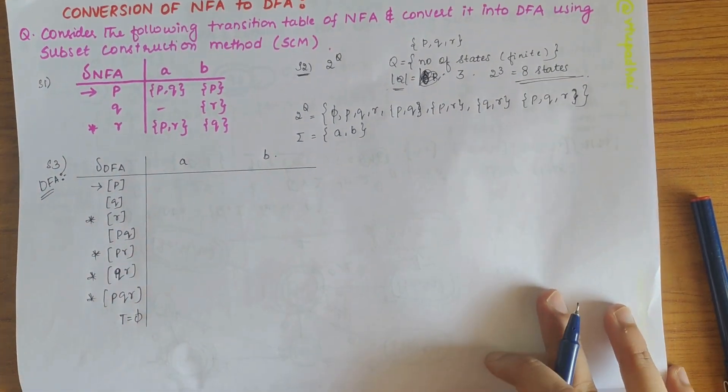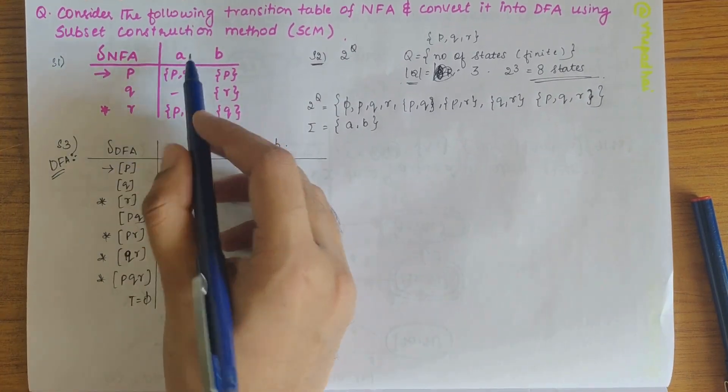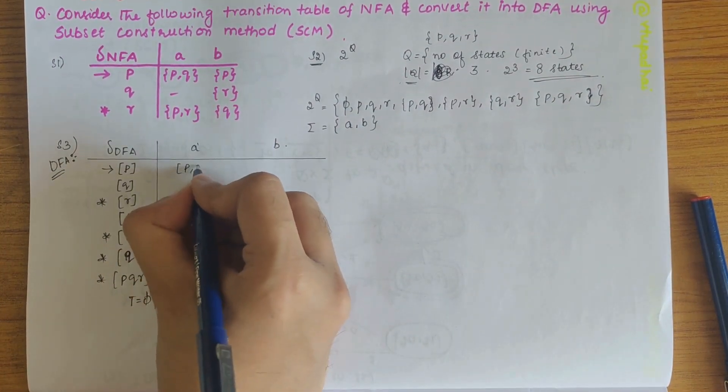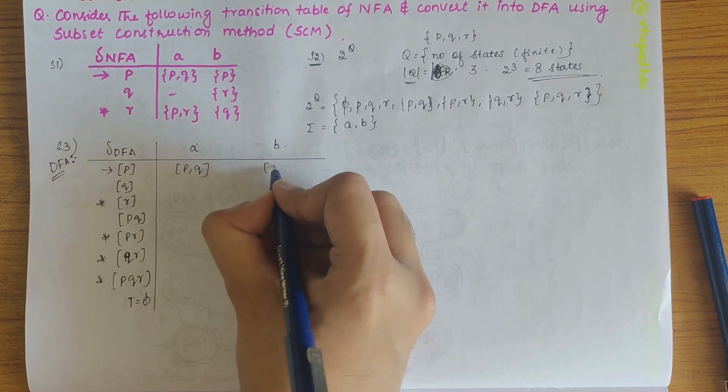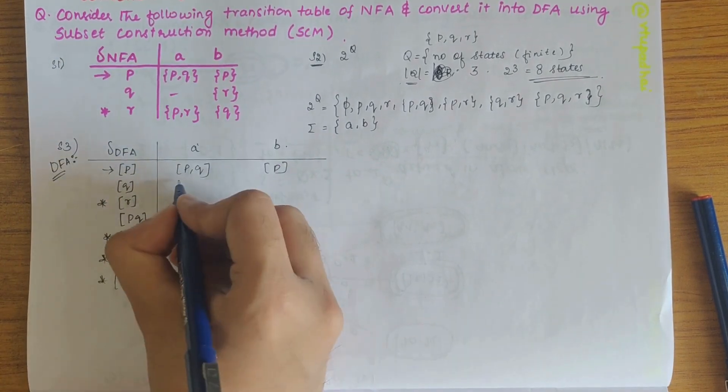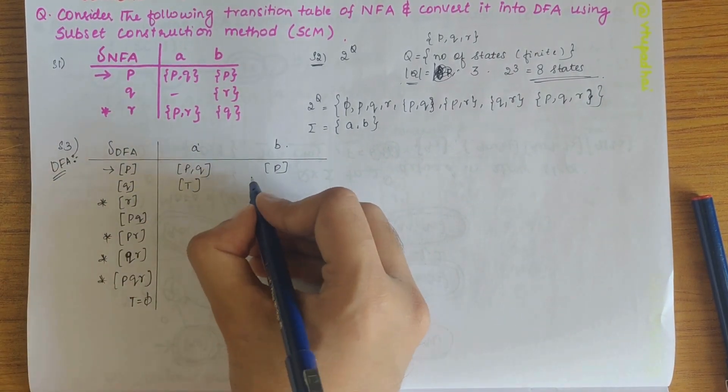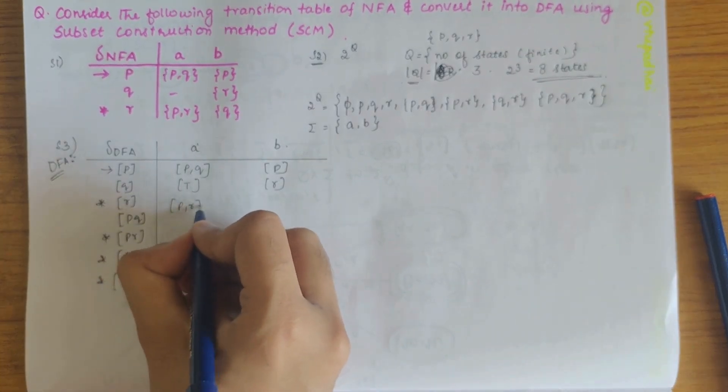So first, p on a, p on a is given as pq and p on b is given as p, q on a is not defined. So let's put t here, q on b is r, r on a is pr, r on b is q.